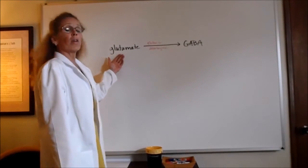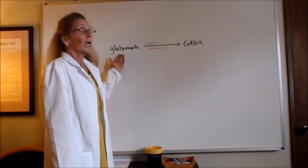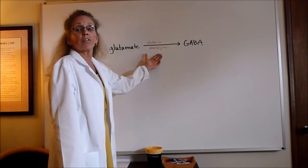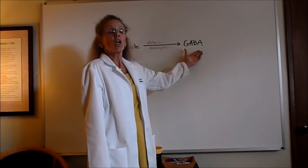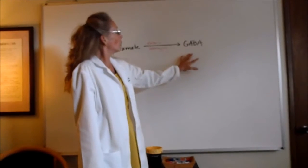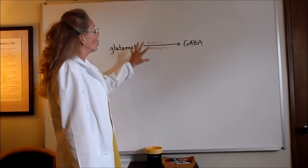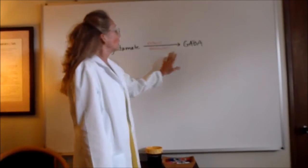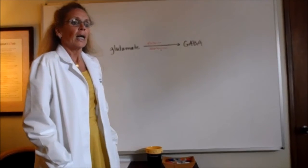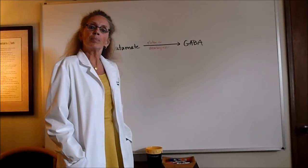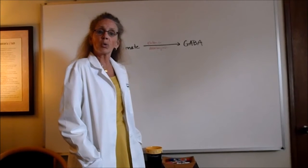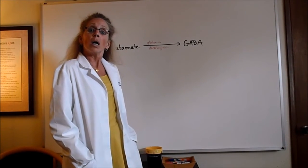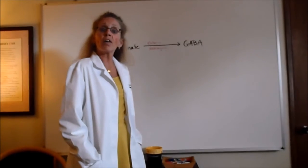Glutamate actually is one of the precursors of GABA and requires the enzyme glutamic decarboxylase in order to transform into GABA. So you can see that this is the biochemical reaction when you want to maintain a level of equilibrium between glutamate and GABA in the brain.